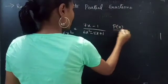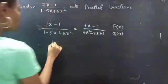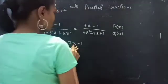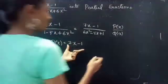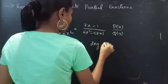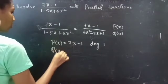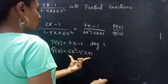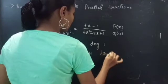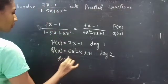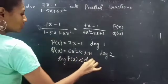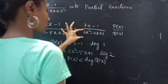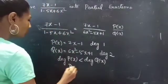Let's consider it as P(x) / Q(x). Here P(x) = 7x − 1, which is a linear polynomial of degree 1. And Q(x) = 6x² − 5x + 1, which is a quadratic polynomial of degree 2. It is clear that the degree of P(x) is less than the degree of Q(x).